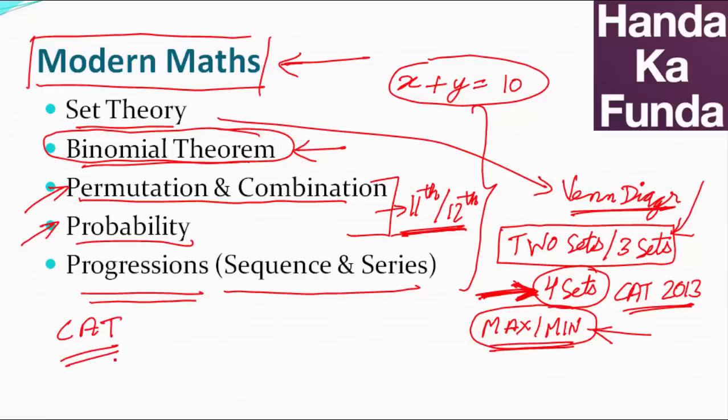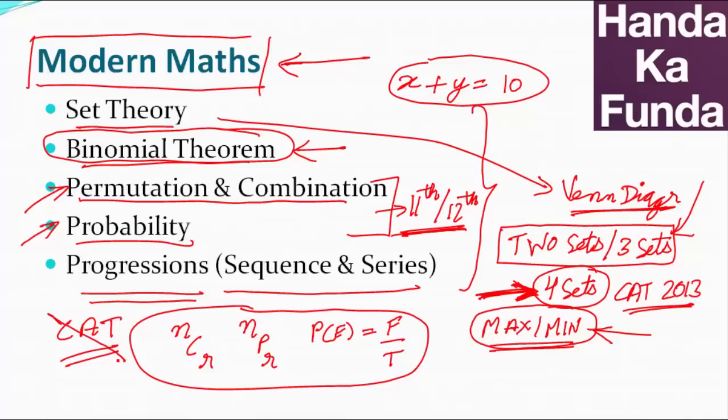For CAT, let me tell you what you need to know with respect to permutation combination and probability. You need to know three things. What is NCR? When should it be used? What is NPR? When should it be used? And the probability of any event is favorable by total. These are the only three formulas that you need to know and you need to know how to apply them.